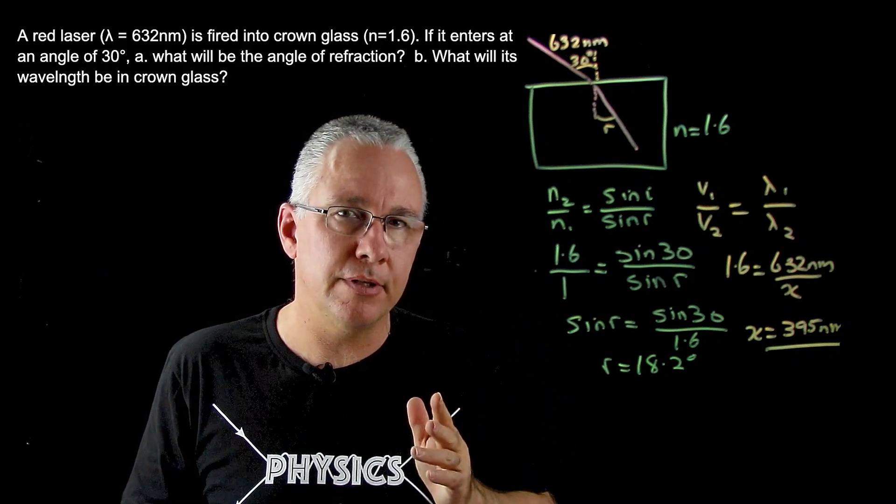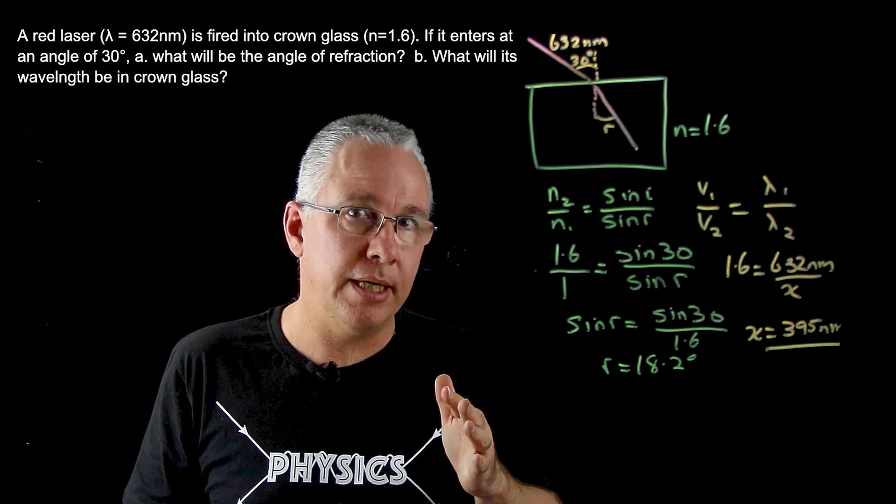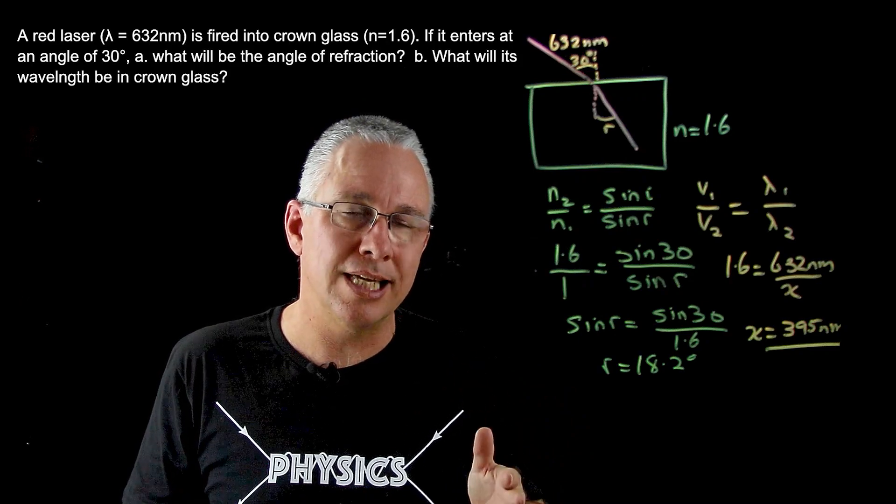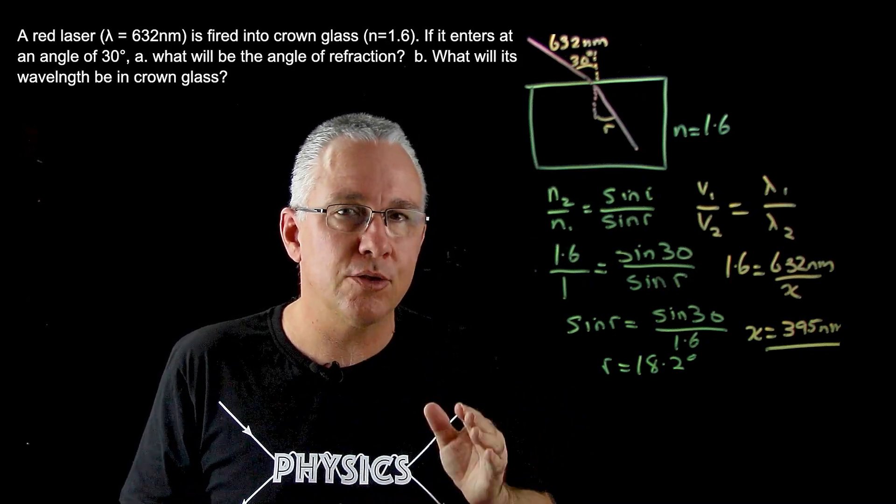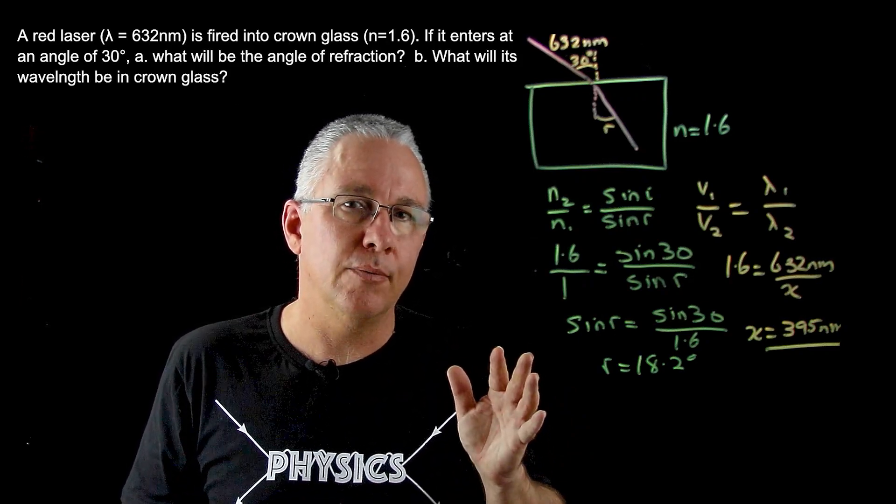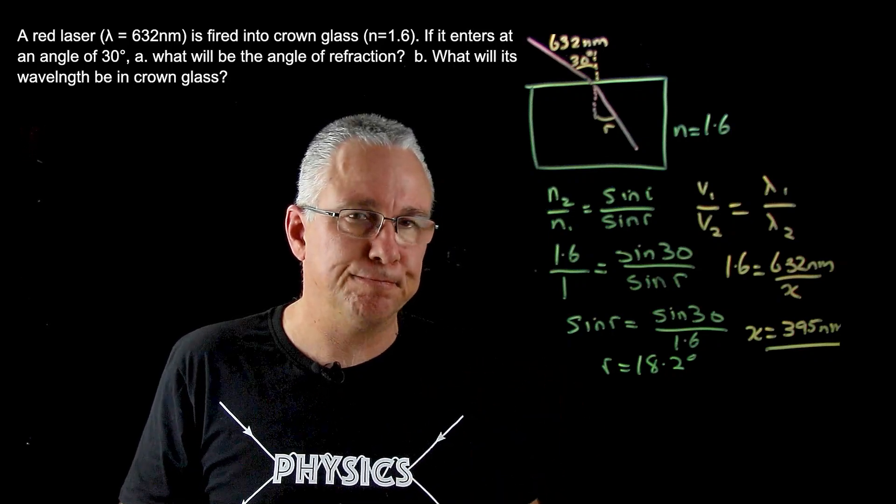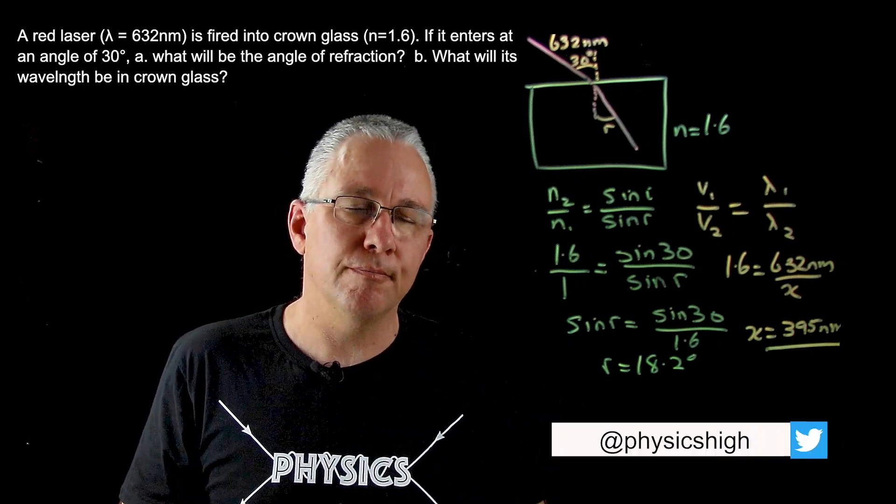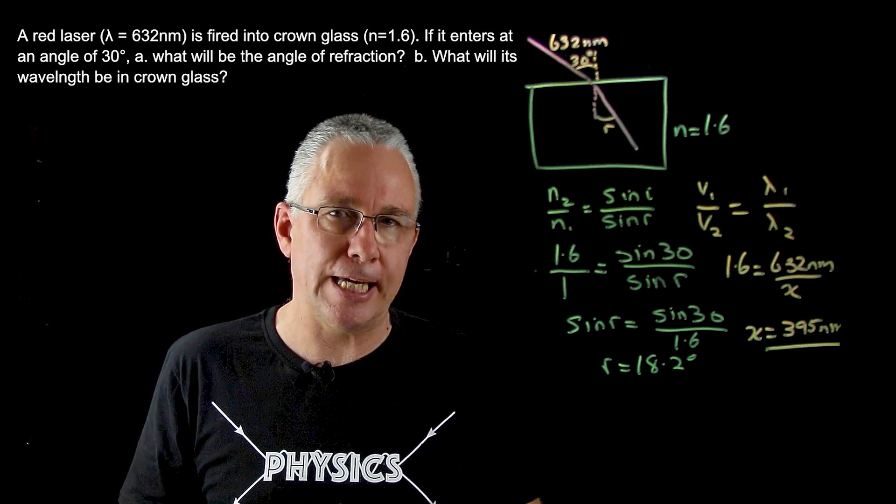Because just an important point, the definition of the speed of light of being 3 by 10 to the power of 8 meters per second is in a vacuum. The actual value is actually less when it enters a denser medium. In any case, hope that this helped you. My name is Paul from High School Physically Explained. Take care. Bye.